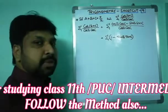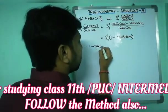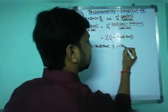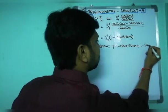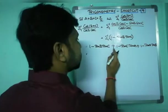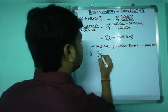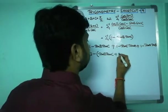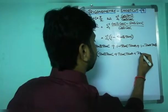Sigma is there. If you expand sigma, you get: (1 minus tan b · tan c) plus (1 minus tan c · tan a) plus (1 minus tan a · tan b). This equals 1 plus 1 plus 1, which is 3, minus (tan b · tan c + tan c · tan a + tan a · tan b).